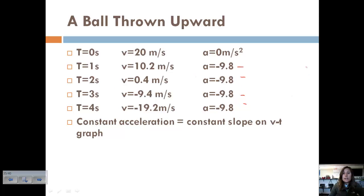So if we plotted these points, we have at time zero, we have 20. And then at time one, we're at like 10 and then 0.4 and then negative 9.4 and then negative 19.2. You can see that we have a constant slope that's also negative. And if we found the slope, that will come out to 9.8. And so that's our acceleration.